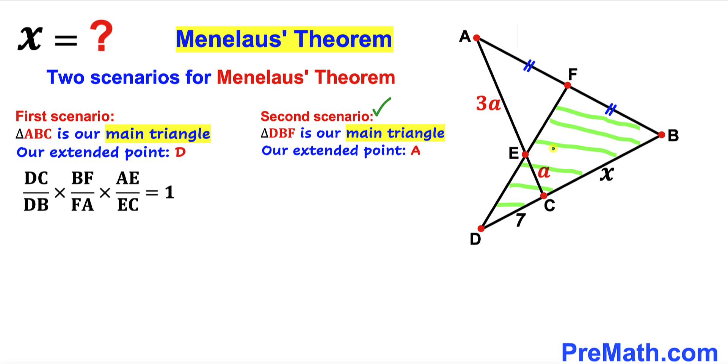And here's our second scenario. Let's assume that this DBF triangle is our principal triangle and this point A is our extended point.